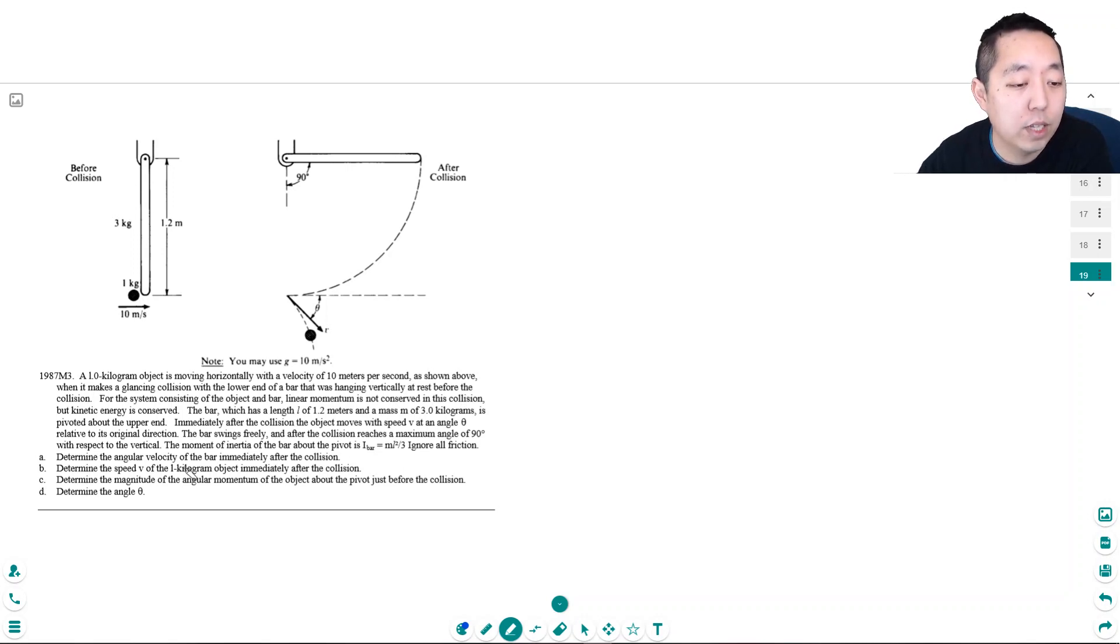Determine the angular velocity of the bar immediately after the collision. Okay? So right after the collision we have energies conserved. That's the only thing we know.